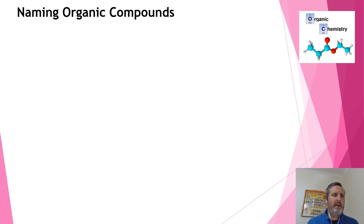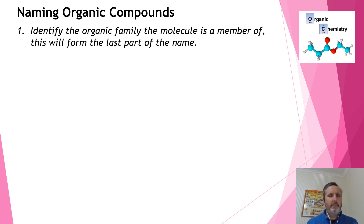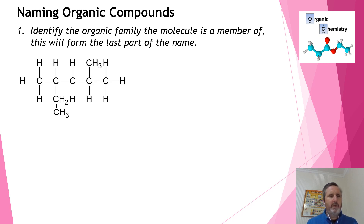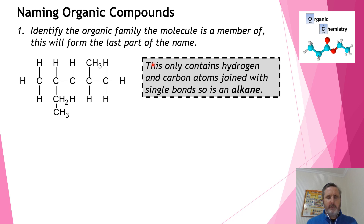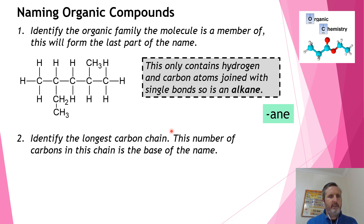Now let's look at how we name these. The first thing we do when naming an organic compound is work out what organic group it comes from. We start by recognising that the simplest organic group is one that only contains carbons and hydrogens — that means it's a hydrocarbon. If it also only has single bonds, then this is going to be an alkane, which means the suffix of its name is going to end with '-ane'.